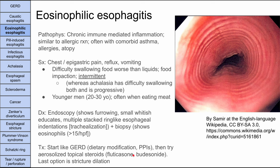Next is eosinophilic esophagitis. The pathophysiology is a chronic immune-mediated inflammation of the esophagus, similar to an allergic reaction, and it is comorbid with asthma, allergies, and atopy — it's an IgE-mediated response. Symptoms include chest and epigastric pain, reflux, vomiting, and difficulty swallowing solid food. Solid dysphagia is the key feature. This is usually intermittent — which helps differentiate it from achalasia, which is progressive — and typically occurs in younger men in their 20s to 30s, often when eating meat.